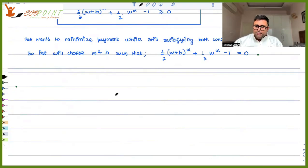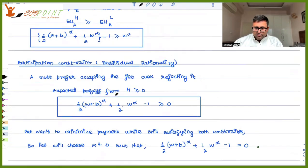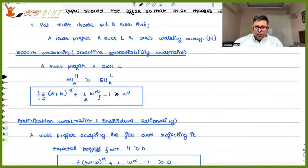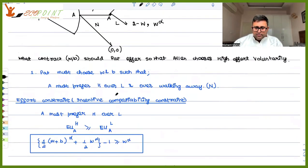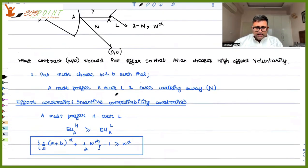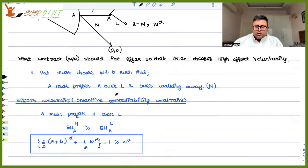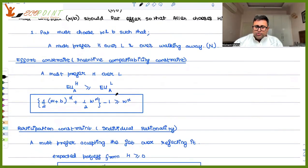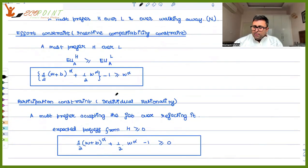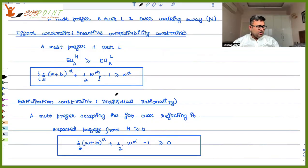We are discussing the principal-agent problem. If you remember, we have been covering this entire problem since the last two or three classes. We have written the incentive compatibility constraint and also the participation constraint. You will have to go back to the earlier recording to understand what's going on.